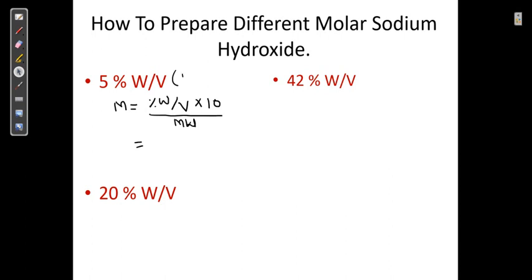For the diluted NaOH solution: M = 5 × 10 divided by 40 (the molecular weight of NaOH). That gives us approximately 1.25 molar, which is rounded to about 1.2 molar. So the diluted sodium hydroxide solution is approximately 1.2 molar.